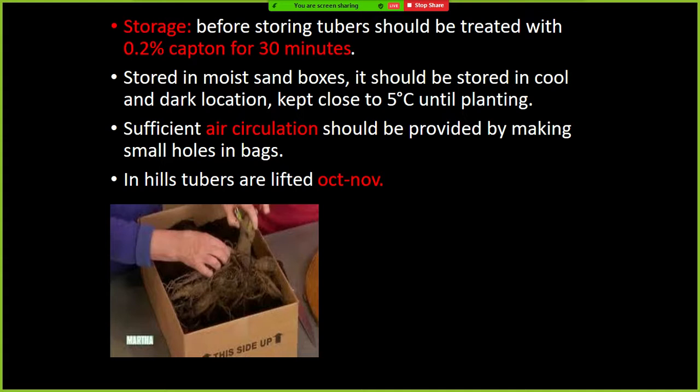To induce more flowering in Dahlia, GA3 is applied. To reduce plant height in Dahlia, Maleic Hydrazide and Cycocel are the two chemicals used. Disbudding and deshooting are done at the peanut stage, when the buds are small. Maleic Hydrazide is widely used for reducing plant height, and Cycocel is also used for this purpose.